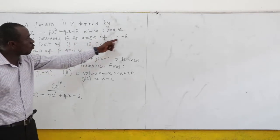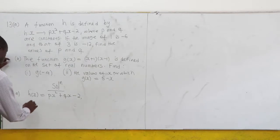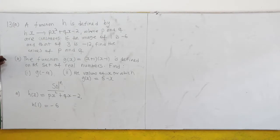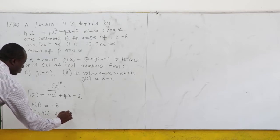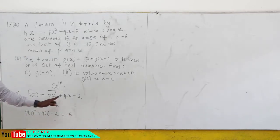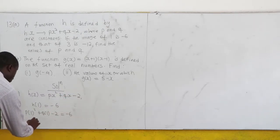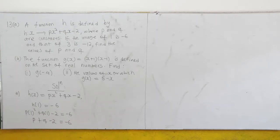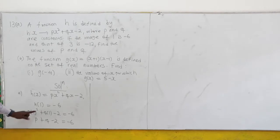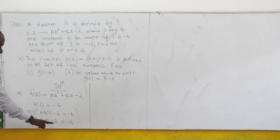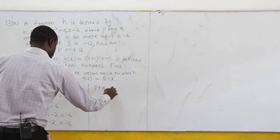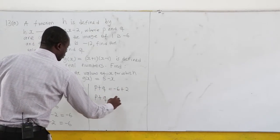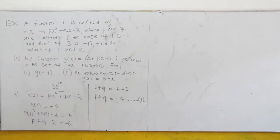We are told that the image of 1 is negative 6. The function is h, so the image of 1 is written as h(1) = -6. Wherever we see x in the function h, we put 1 there. So we have p(1)² + q(1) - 2 = -6, which is just p + q - 2 = -6. Taking the -2 to the right hand side, p + q = -6 + 2, so p + q = -4. That is equation 1.